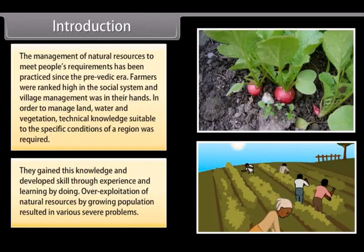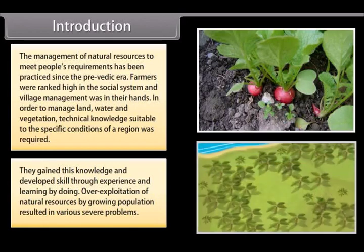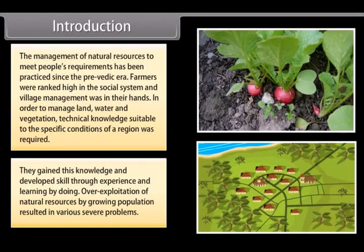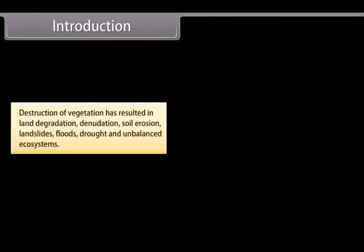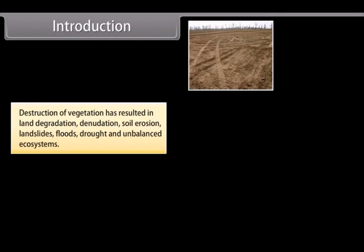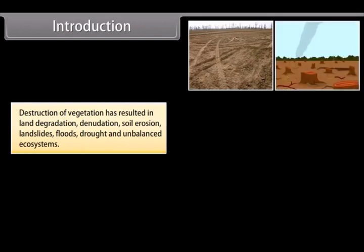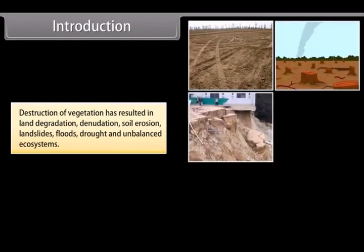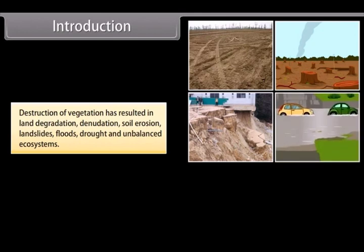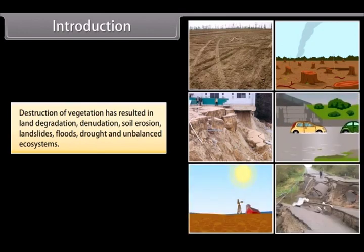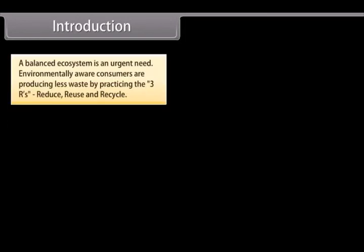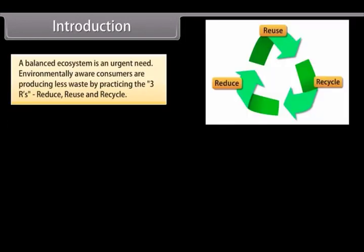Over-exploitation of natural resources by a growing population resulted in various severe problems. Destruction of vegetation has resulted in land degradation, denudation, soil erosion, landslides, floods, drought, and unbalanced ecosystems. A balanced ecosystem is an urgent need.